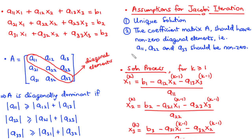Most preferably, we want A to be a diagonally dominant matrix. The matrix A is said to be diagonally dominant if for every row, the absolute value of the diagonal element is greater than or equal to the sum of the absolute values of the remaining elements in that row.